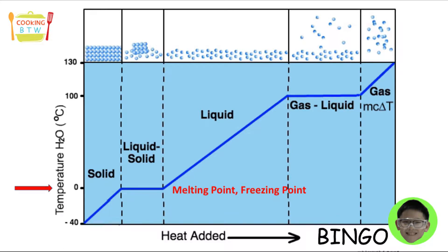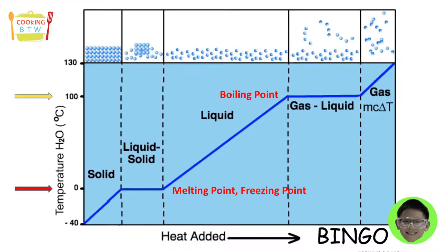The temperature at which a substance melts is called the melting point. The melting point of water is 0°C. The temperature at which a substance boils is called the boiling point. The boiling point of water is 100°C. The temperature at which a substance freezes is called the freezing point. The melting point and boiling point of any substance depend on its mass.